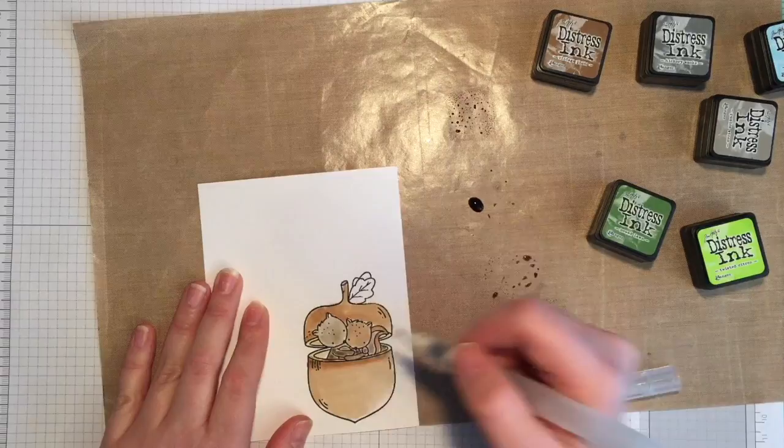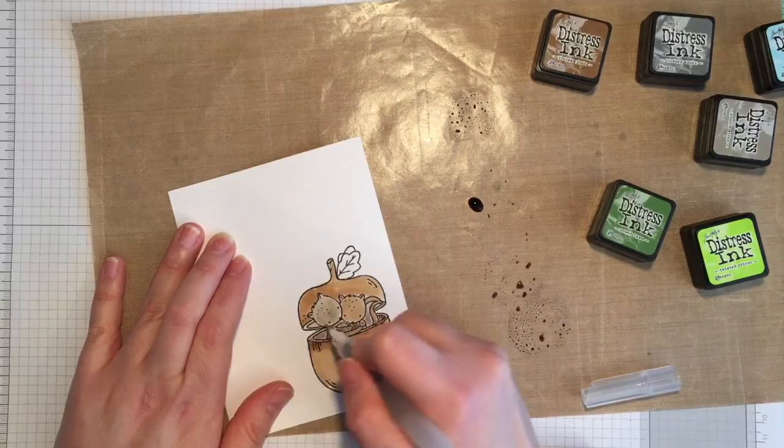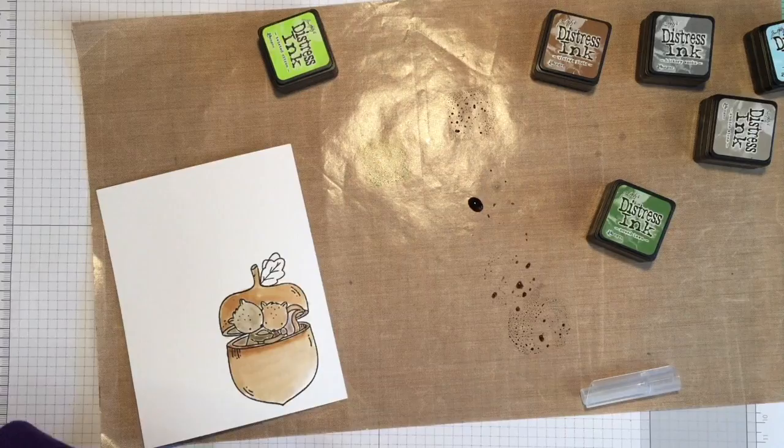Then I'm going to be using the twisted citron for the leaf and then once that's dry I'm going to use the mowed lawn to add some shading.